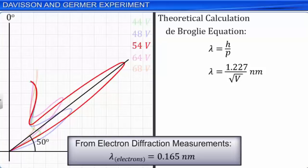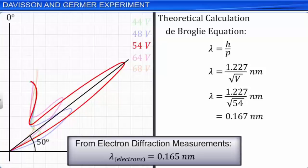In this experiment, for diffraction of electrons, the peak value of intensity was observed at 54 volt. On substituting this value in the equation and simplifying, we get the associated wavelength equal to 0.167 nanometer. This theoretical value is in agreement with the experimentally obtained value of De Broglie's wavelength for electrons. The Davisson-Germer experiment thus confirms the wave nature of electrons and the validity of the De Broglie relation.